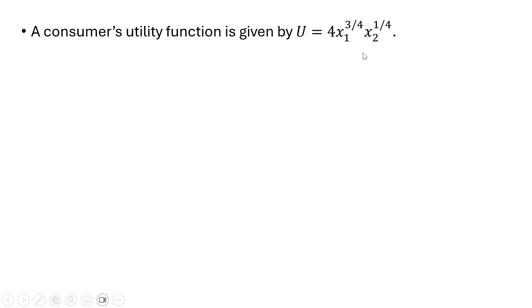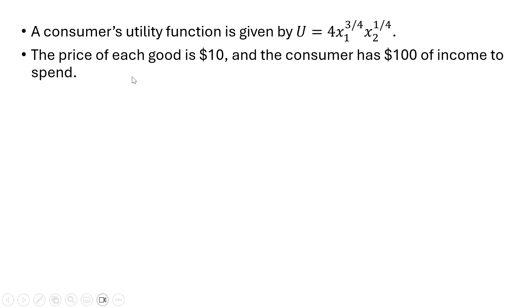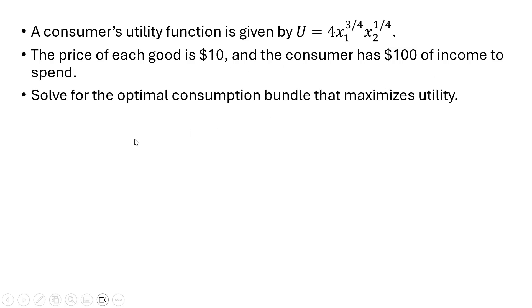The consumer's utility function is given by the following — utility is a function of good 1 and good 2. The price of each good is $10, and the consumer has a money income of $100. We want to solve for the optimal consumption bundle that maximizes utility.